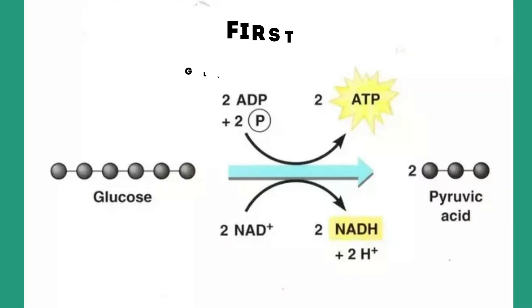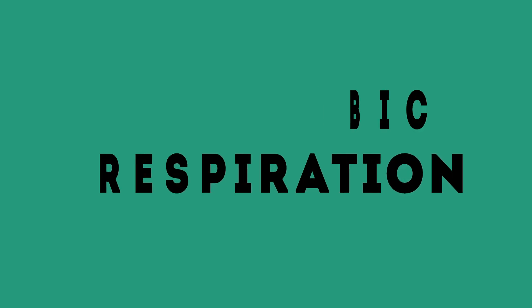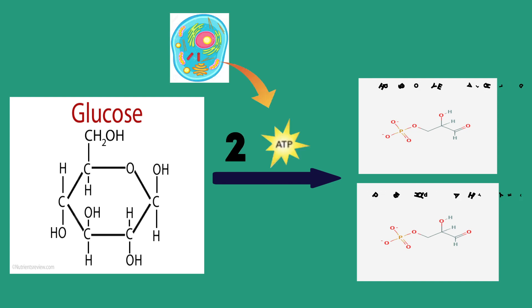This process takes place in three major stages. First, glycolysis. It occurs in cytosol, in cytoplasm and in the absence of oxygen, so it's called anaerobic respiration. One mole of glucose is broken down into two phosphoglyceraldehyde, three carbon, with the use of 2 ATP from the cell.